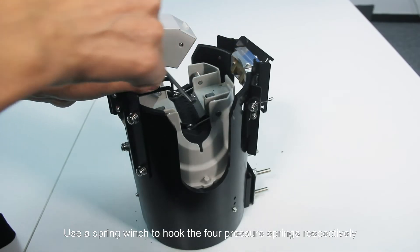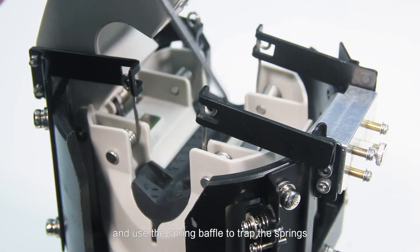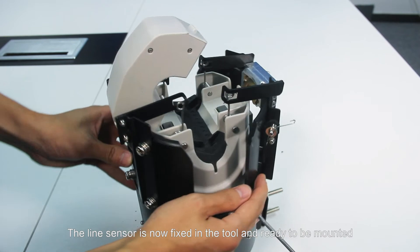Use a spring winch to hook the four pressure springs respectively and use the spring baffle to trap the springs. The line sensor is now fixed in the tool and ready to be mounted.